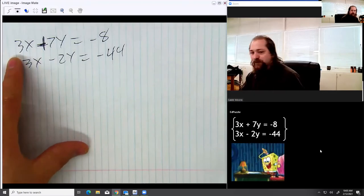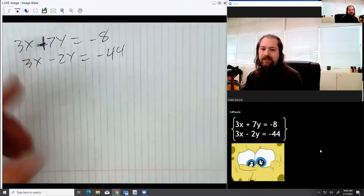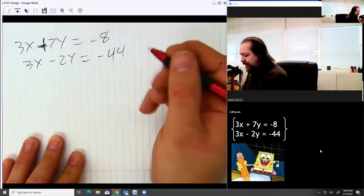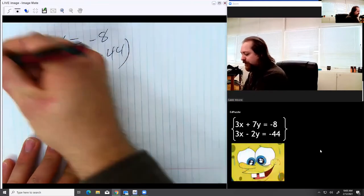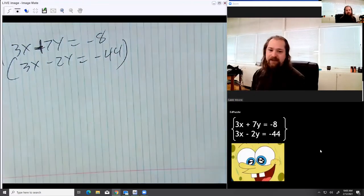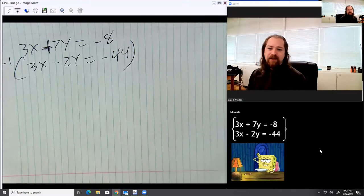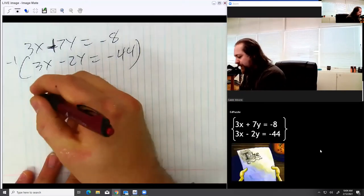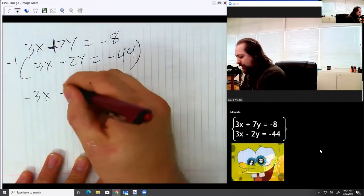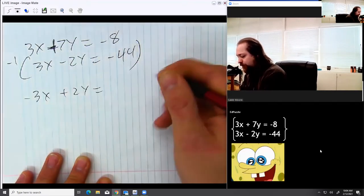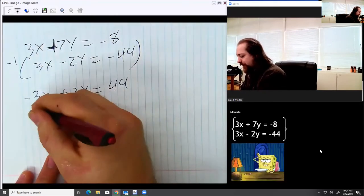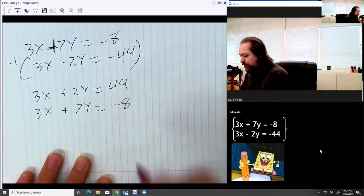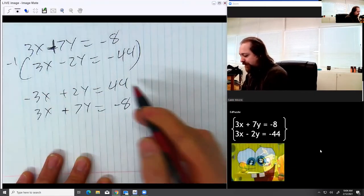So I'm actually going to need to change one of these equations to make it work. I'm going to change the second one. So I'm going to multiply everything in the second equation by a negative 1, because that's going to change everything in there to another sign. If I have a negative 3x, they're going to cancel. So that gives me negative 3x plus 2y equals a positive 44. And then I'll go ahead and write the other one underneath. 3x plus 7y equals negative 8. So notice these stay the same. It's only the top one that's getting changed.